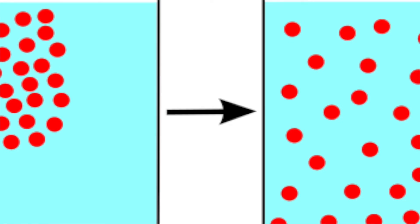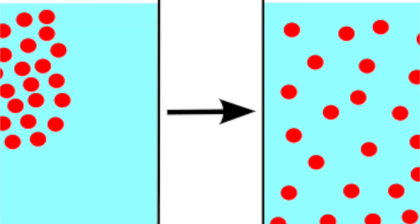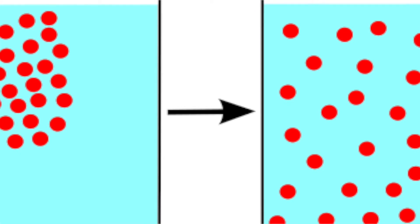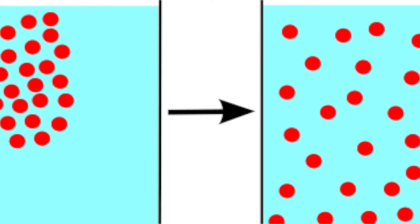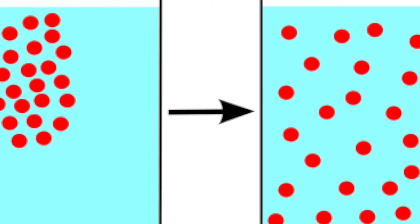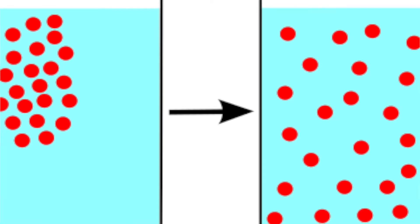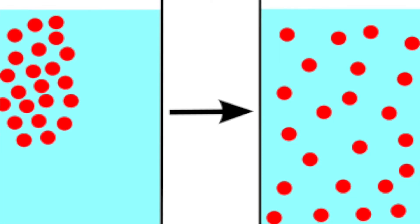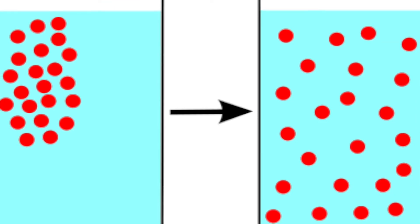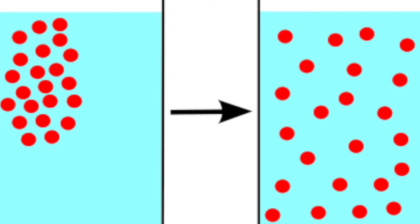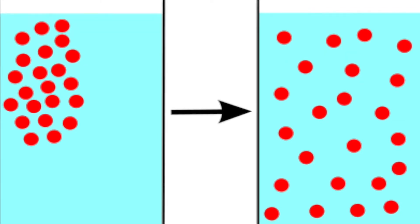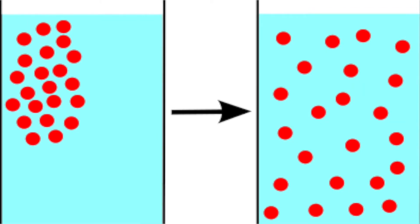Next we need to know about rates of diffusion. The majority of particles will move towards the area of low concentration where there aren't many particles. Only a few will go towards the area of high concentration. The difference between the concentrations is called the concentration gradient. The higher the concentration gradient, the quicker diffusion is going to take place.